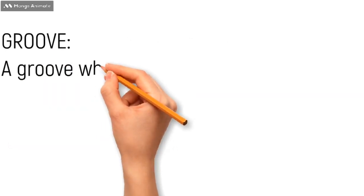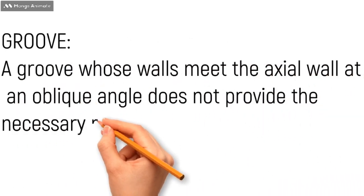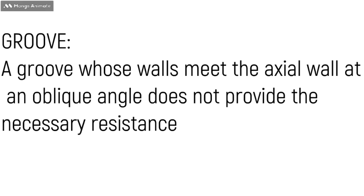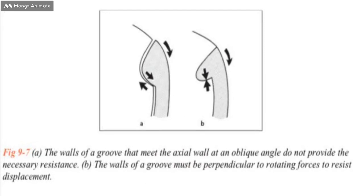How to limit this displacement? First, we can make some grooves. A groove whose walls meet the axial wall at an oblique angle does not provide the necessary resistance, as you can see in this figure A. You can see how the walls of the groove are meeting the axial wall at an oblique angle, which is not providing the necessary resistance. While in B you can see the walls of a groove are perpendicular to direction of the force to sufficiently limit the freedom of displacement and provide adequate resistance.